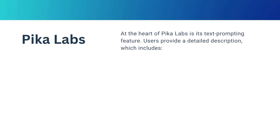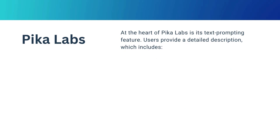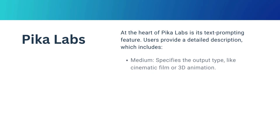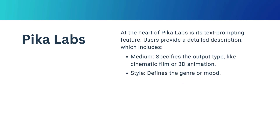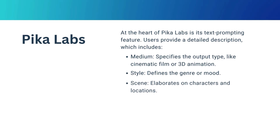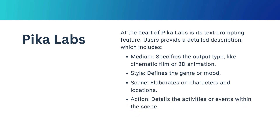At the heart of PicaLabs is its text prompting feature. Users provide a detailed description which includes: medium — specifies the output type like cinematic film or 3D animation; style — defines the genre or mood; scene — elaborates on characters and locations; action — details the activities or events within the scene.